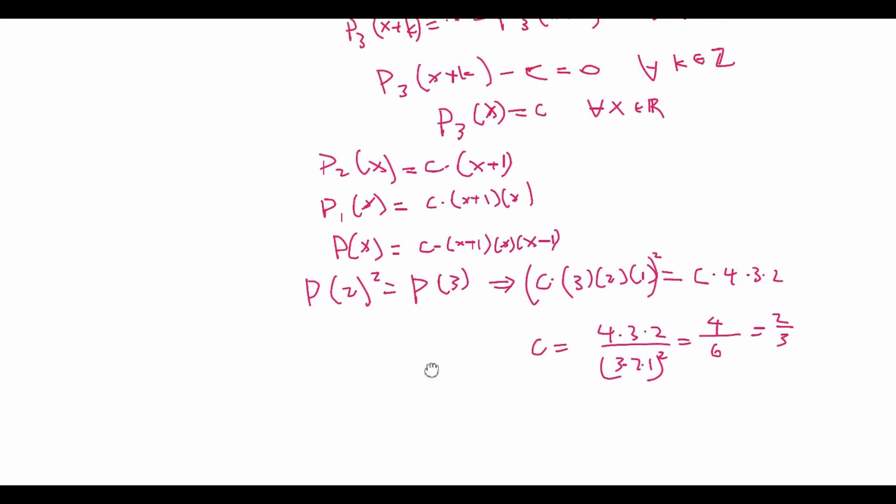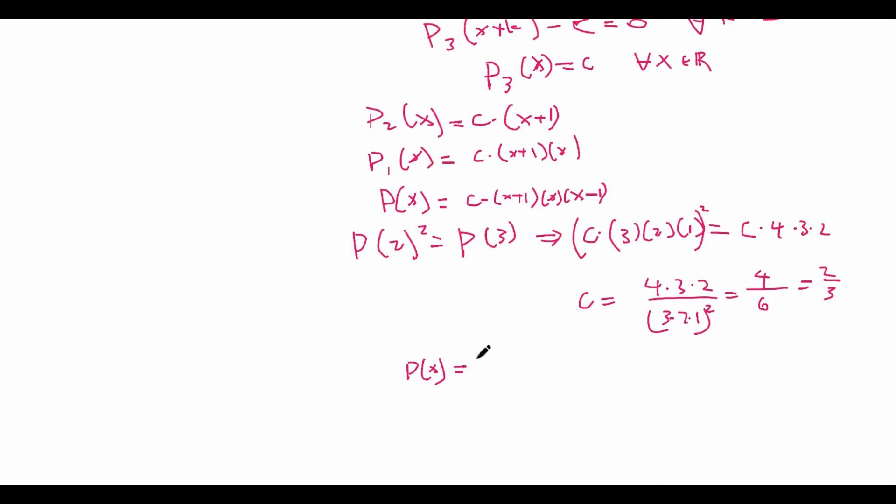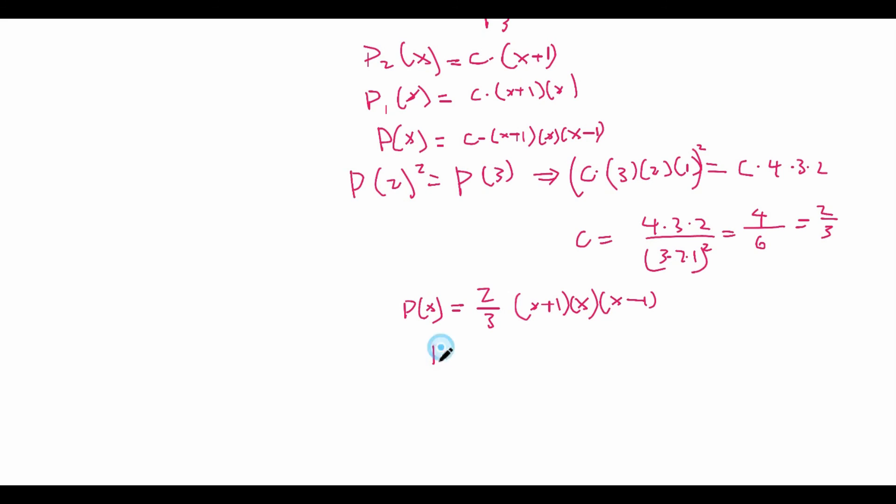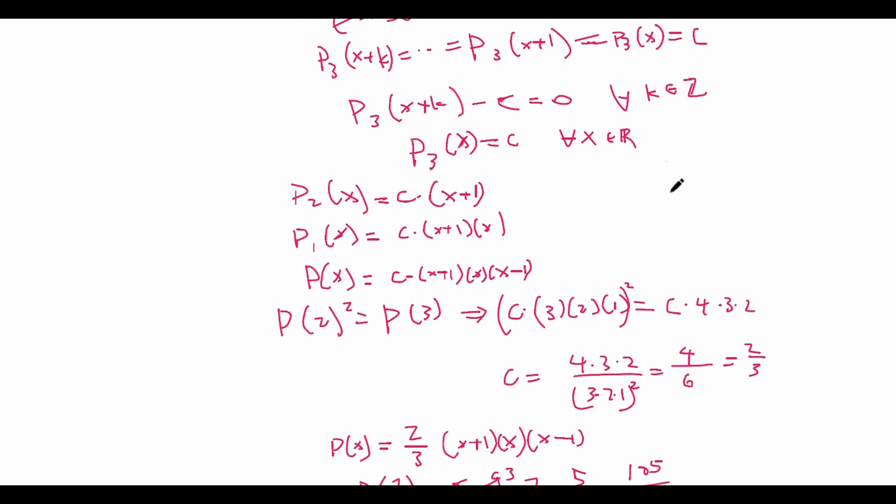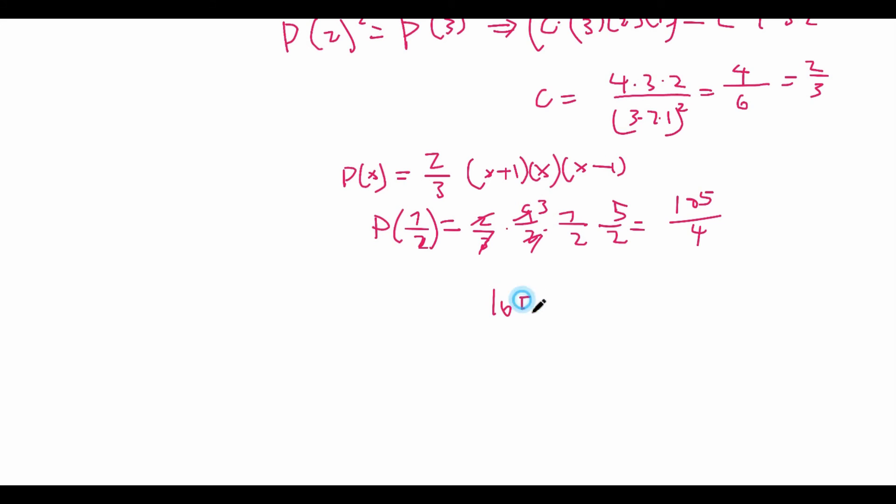Which means that c equals 2/3, which means that P(x) is equal to 2/3 times (x+1) times x times (x-1). Which means that P(7/2) is equal to 2/3 times 9/2 times 7/2 times 5/2. This is equal to, the 2's cancel out, 3 will cancel out with 9. So 3 times 7 times 5 is equal to 105 over 4. So this is in the format m/n and we want to find m+n, which means that our final answer is going to be 105 plus 4, or 109. And this is our answer, we are done.